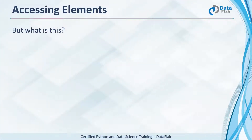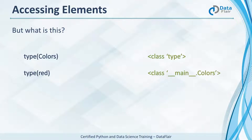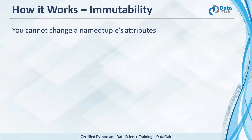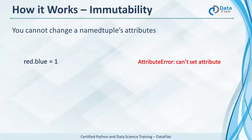What are these things? Well, colors is a class. Red is an object of this class. And red from the object red is an integer, an object of the class integer. Just like a tuple, you cannot change a named tuple's attributes. Red dot blue is one now — this gives us an attribute error. Like a tuple, a named tuple is immutable.